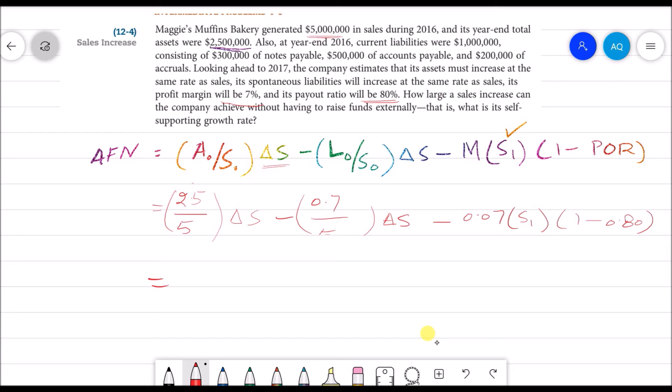By dividing this, we will get 0.5. By dividing this, we will get 0.14ΔS minus 0.014ΔS. So when we get 0.014ΔS, we can write change in sales as S₁ minus S₀. We can write change in sales as S₁ minus 0.014S₁.